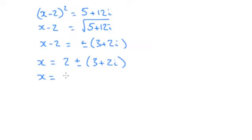So 2 plus 3 would be 5 plus 2i. Or 2 minus 3 would be minus 1 and then the minus 2i. So those are your two answers for part 2.